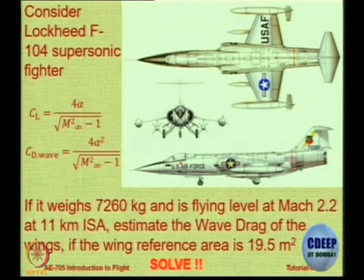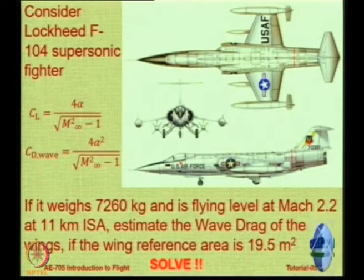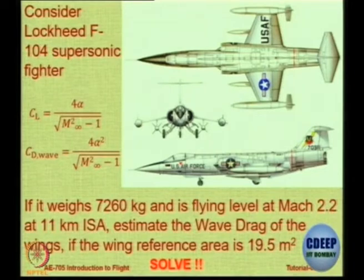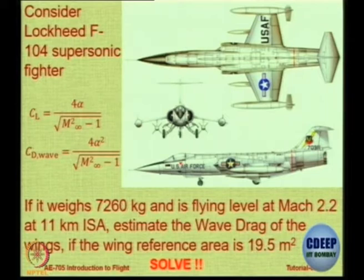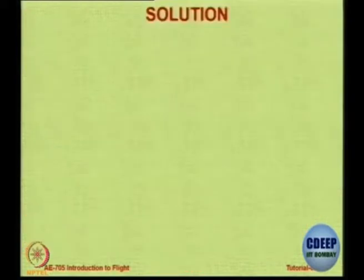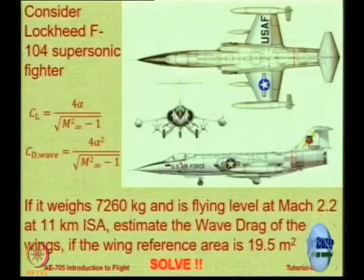CL = 4α / √(M² − 1), and CD_wave = 4α² / (M∞² − 1), because wave drag is predominant only when Mach number is greater than 1. Using this information, please solve and get the value of wave drag. First, I want to know the procedure — how will you solve this question? What do you need to estimate the wave drag?